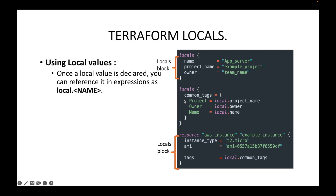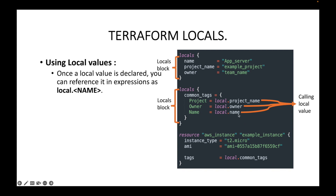Here I have one locals block with name, project_name, and owner as my local names with their respective values. In another locals block, I've created a common_tags entry. For the values, I am referencing the first locals — using local.name, local.owner, and local.name. That's how we call local values wherever we want in the configuration file. Here, I'm calling local.common_tags so all the key-value pairs in that locals block will be applied as tags when creating the resource.